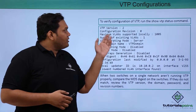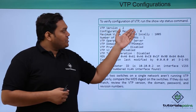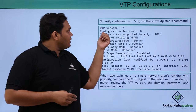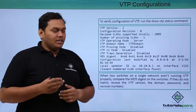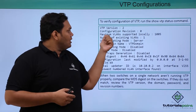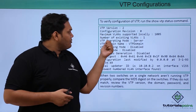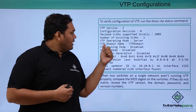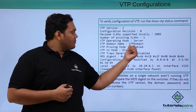To verify the VTP configuration, we run the 'show VTP status' command. This gives us information such as VTP version 2, configuration revision set to 0, number of existing VLANs as 1, operating mode as server, and domain name as VTP domain.